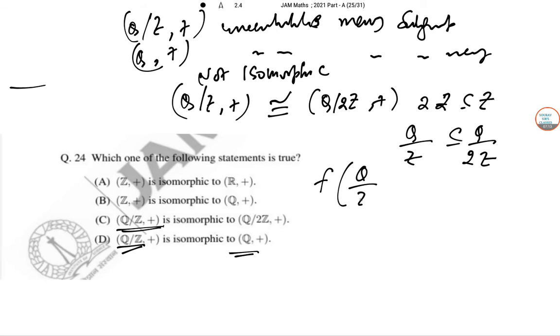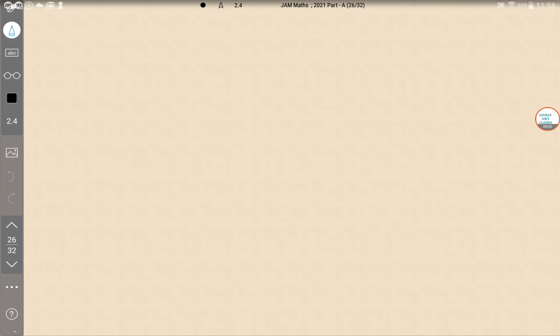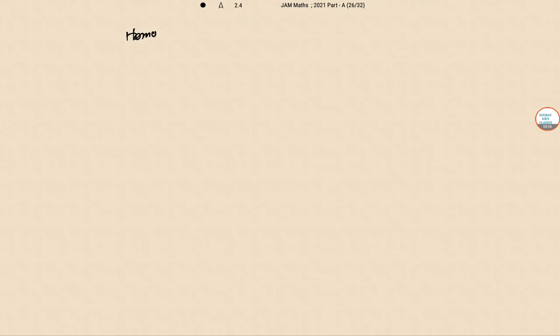Let us create a function F of Q by Z comma plus to Q by 2Z comma plus. So, I am mapping F of X plus Z if we take, that is X plus 2Z. So, F of X plus Z, Y plus Z is F of X plus Y plus Z. So, that is X plus Y plus 2Z. In this way if we proceed, this can be written as F X plus F Y. Now, this is called homomorphism.